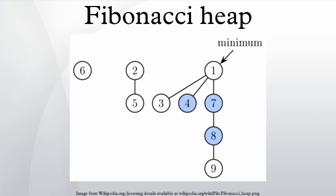To allow fast deletion and concatenation, the roots of all trees are linked using a circular, doubly linked list. The children of each node are also linked using such a list. For each node, we maintain its number of children and whether the node is marked. Moreover, we maintain a pointer to the root containing the minimum key. Operation find minimum is now trivial because we keep the pointer to the node containing it. It does not change the potential of the heap, therefore both actual and amortized cost are constant.